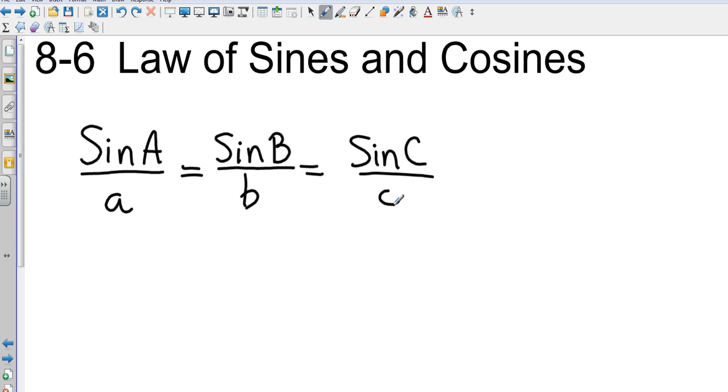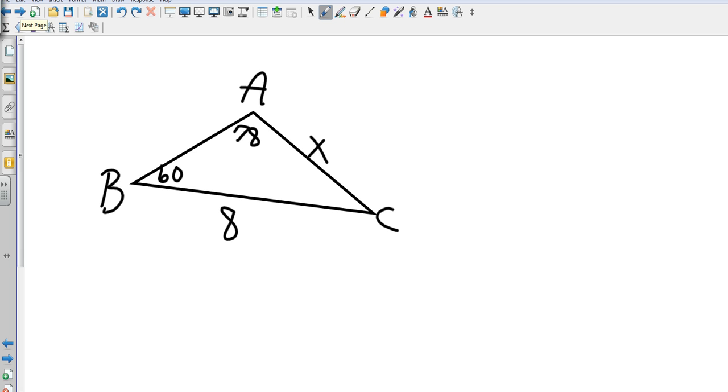So let's take a look at an example. In this case I've got two angles: I've got 60 and 78. I don't need to know what the third angle is. I could add up and subtract that from 180, but I don't need to know that.